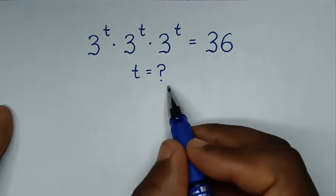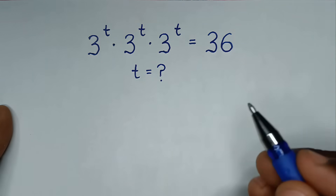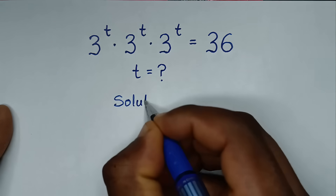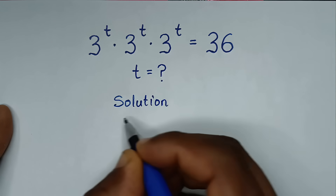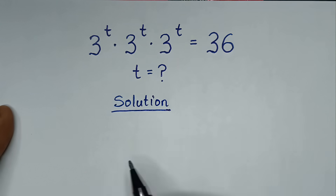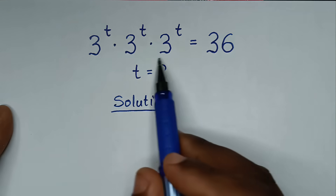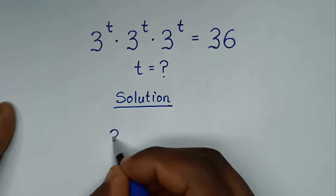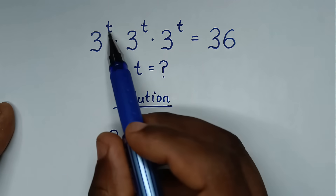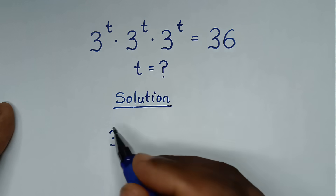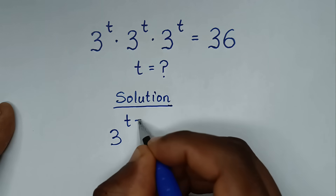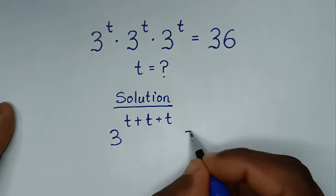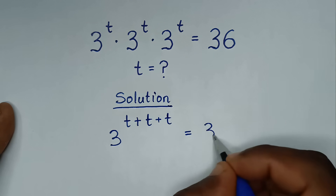To find the value of t from this equation. From the left side, 3 is common, so it will be 3. Then we add the powers, so it will be this plus this plus this. So t plus t plus t is equal to 36.